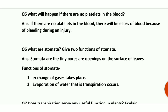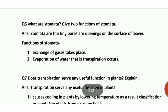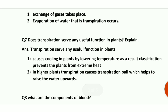Question number 6: what are stomata? Give two functions of stomata. Stomata are tiny pores — small openings — present on the leaf surface. Their functions are: first, exchange of gases — CO2 needed for photosynthesis enters through stomata, and oxygen released as a product of photosynthesis exits through stomata. Second, evaporation of water, which we call transpiration — loss of water also occurs through stomata.